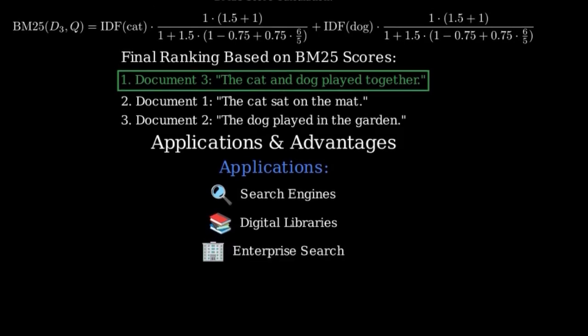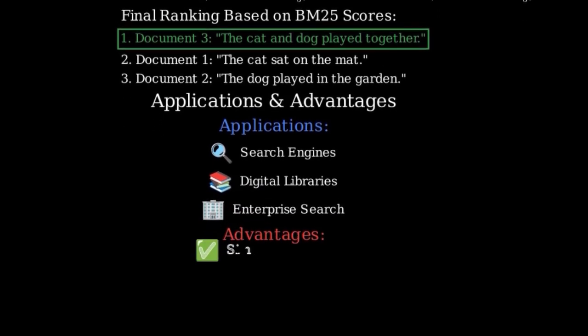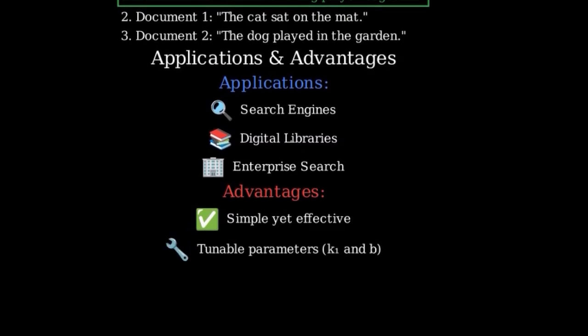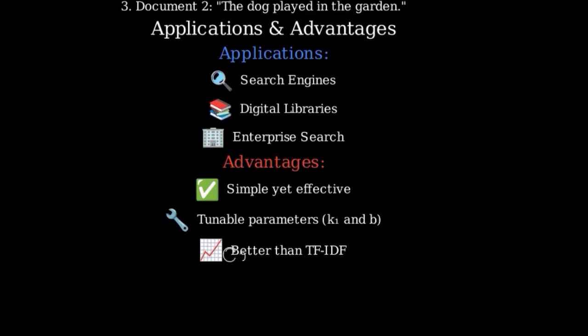The advantages of BM25 include: Simple yet effective - it achieves good performance with a relatively simple formula. Tunable parameters - it allows for fine-tuning through the k_1 and b parameters. Better than TF-IDF - it addresses the limitations of TF-IDF by better handling term saturation and document length.